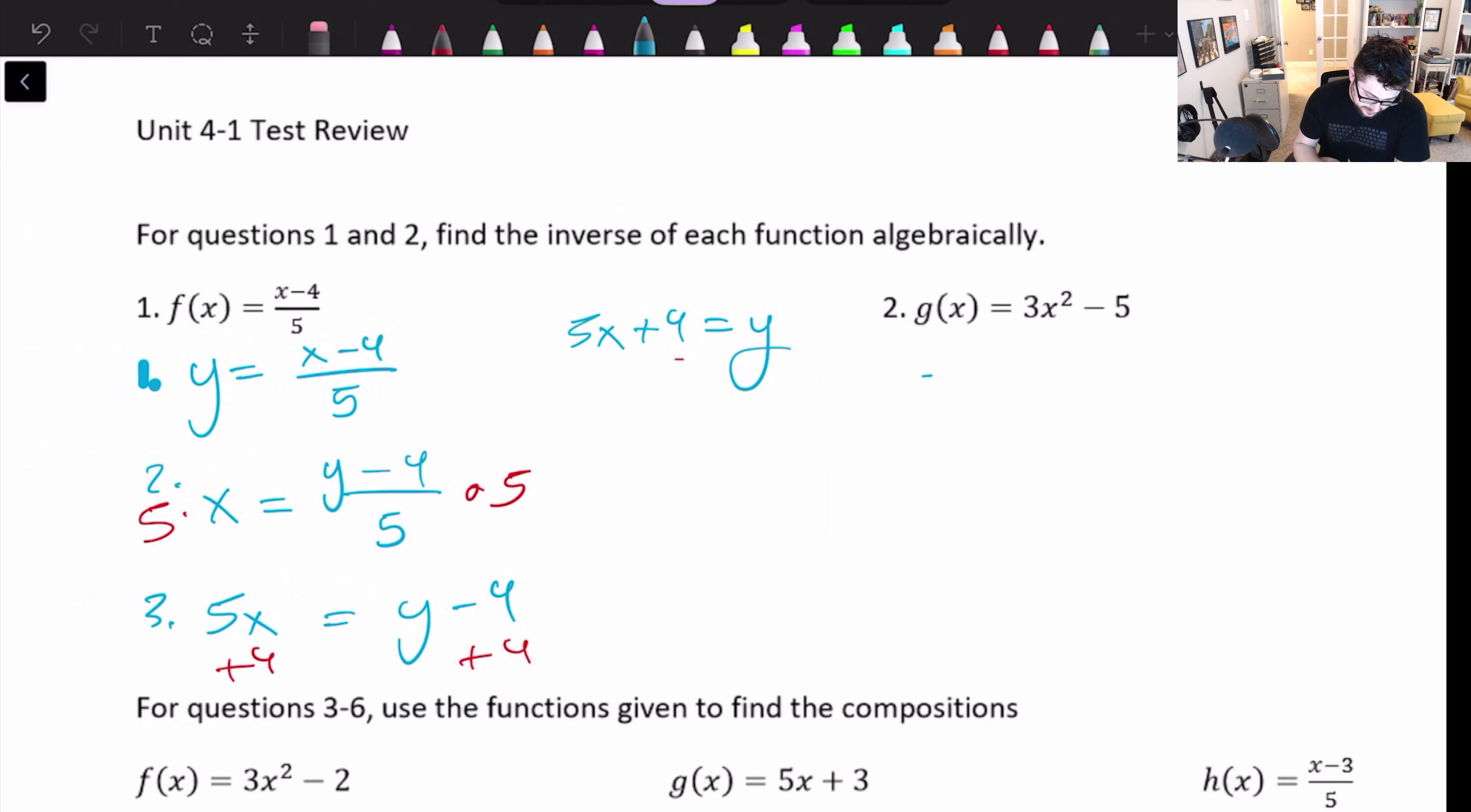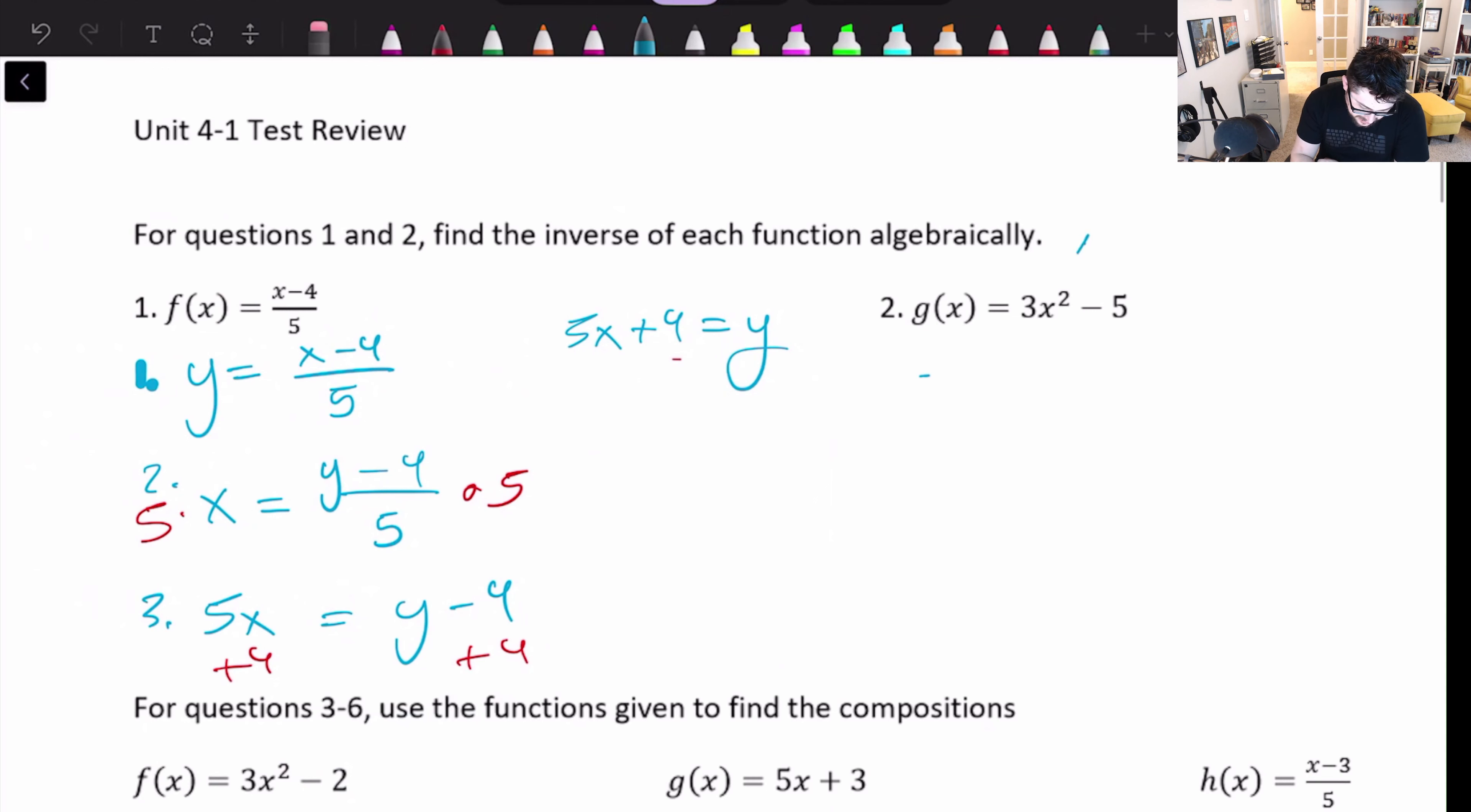Now, so that's what you would do on the next problem. Now, one thing to note, you see how there's an x squared here. That means the inverse of that is going to be a square root. So just expect to square root both sides at some point in your problem.